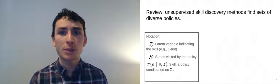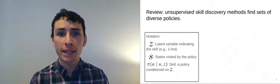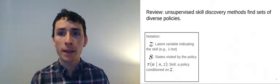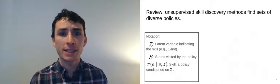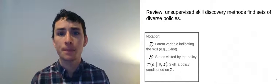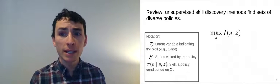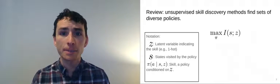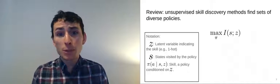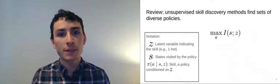To define that objective, we have to introduce a bit of notation. We will use z as a latent variable indicating the skill. This is often a one-hot vector, though some work uses a continuous latent variable. And we'll use s to denote the states visited by the policy. To denote a specific skill, we'll use π conditioned on z. Formally, most of these methods maximize the mutual information between the latent variable z and the states visited. Some of these methods include additional conditioning information. Intuitively, the mutual information tells us how much changes in the latent variable affect changes in the states visited.